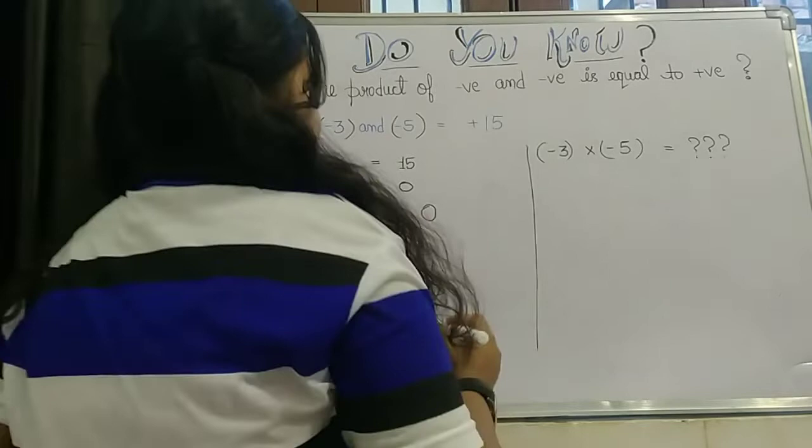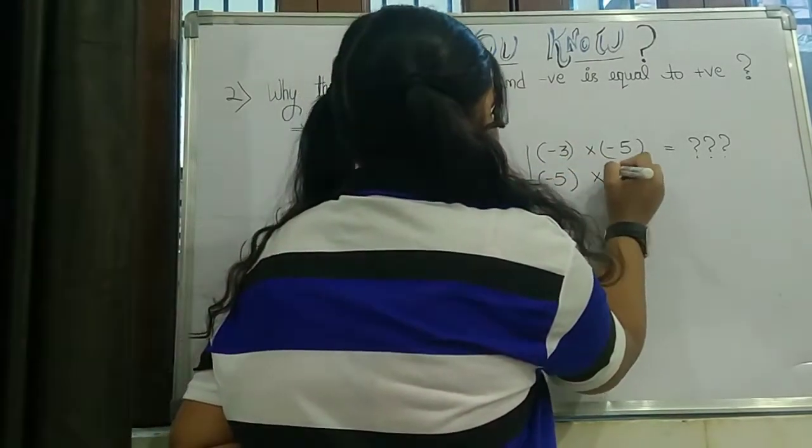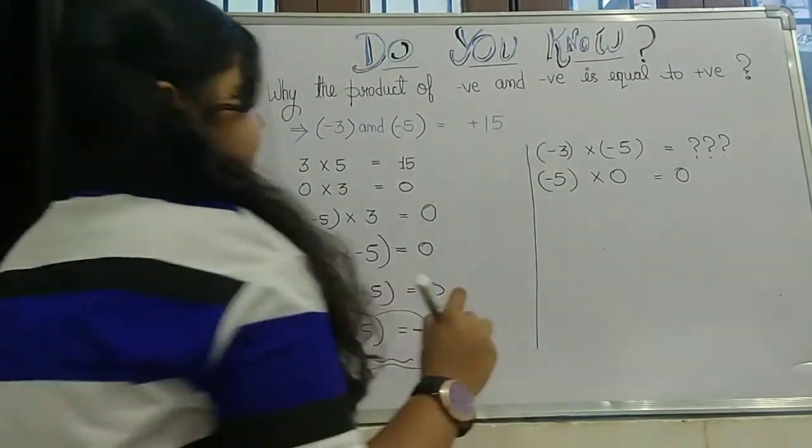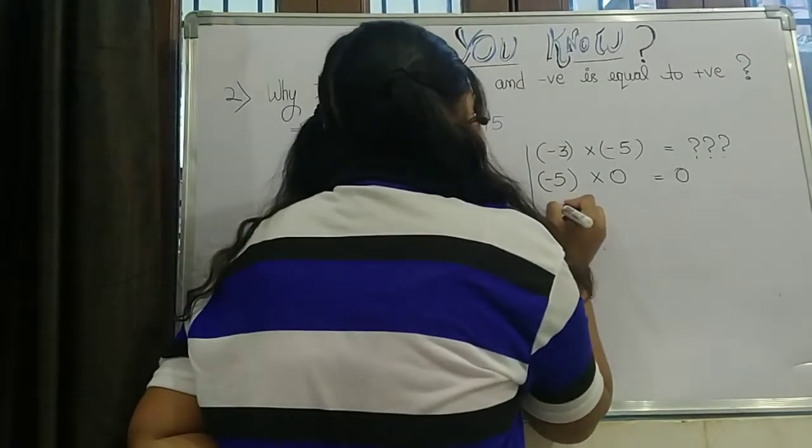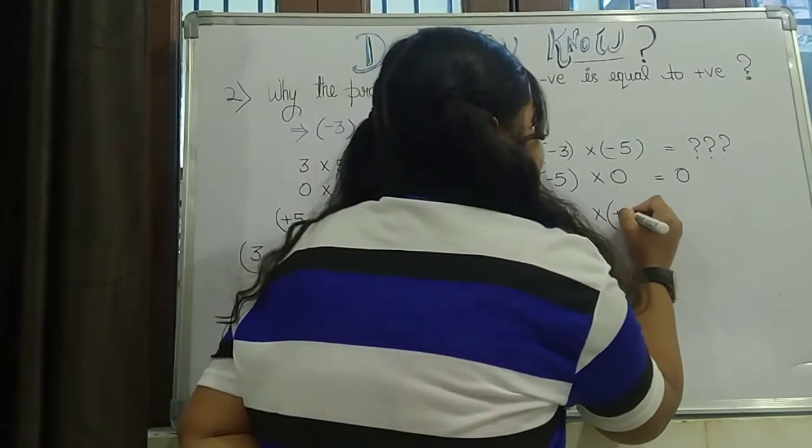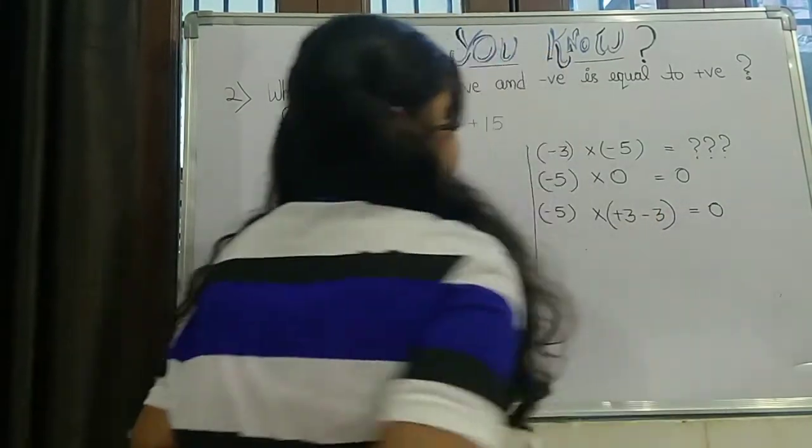So let's see here what we can do. So minus 5 into 0 is always equal to 0. Same concept used here. Now can we make it like minus 5 into plus 3 and minus 3?